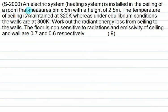An electric heating system is installed in the ceiling of a room measuring 5 m by 5 m with a height of 2.5 m. The temperature of the ceiling is maintained at 320 K, while under equilibrium conditions the walls are at 300 K. Work out the radiant energy loss from the ceiling to the walls. The floor is non-sensitive to radiation and will not participate.